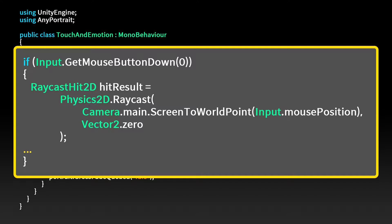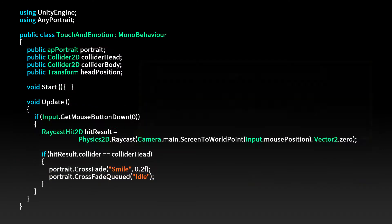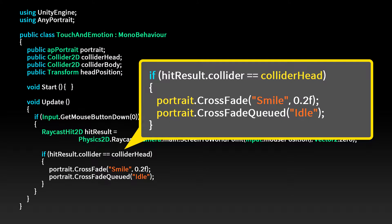This code checks which collider was pressed when the mouse is clicked. If you click on the collider located at the head of the character, it starts the smile animation and then makes the idle animation play next.